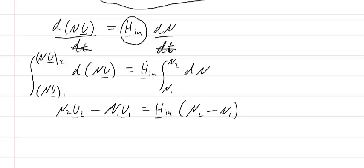So now my other assumption here that the tank was initially empty, so at condition 1, the tank was empty. And so then this disappears as well. And so what we get is, and then we can cancel out N2, the final amount in the system. And so we get the final internal energy is equal to the enthalpy coming in.